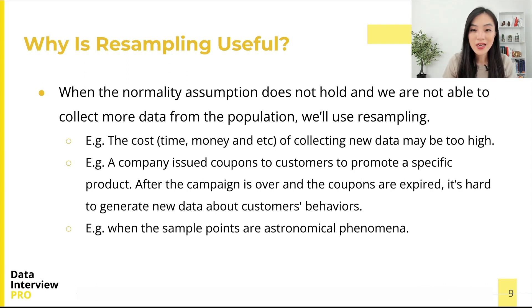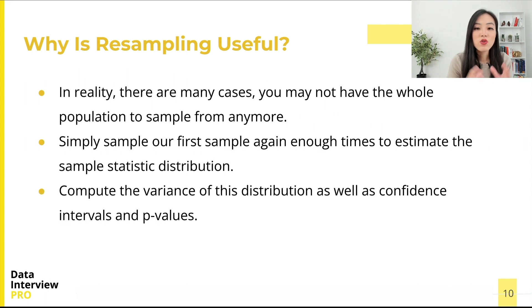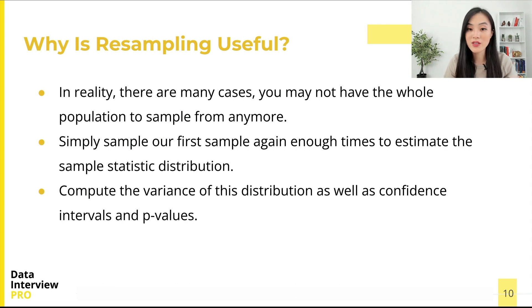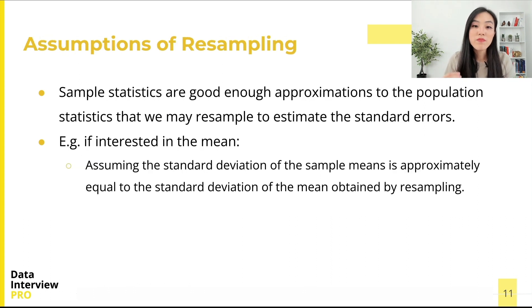In an observational study, we may not know when we will next be able to observe new data points — for example, when the sample points are astronomical phenomena. In many real cases, you may not have the whole population to sample from anymore. To solve these problems, we simply sample our first sample again enough times to estimate the sample statistic distribution. This is resampling.